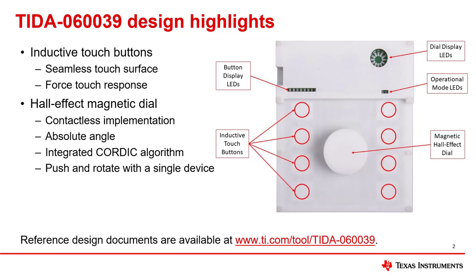The Hall Effect magnetic dial is in the center of the design and can give rotational data and be used as an additional push button. This magnetic dial is also a contactless implementation, which reduces potential wear and tear when compared to contact-based rotation sensing.